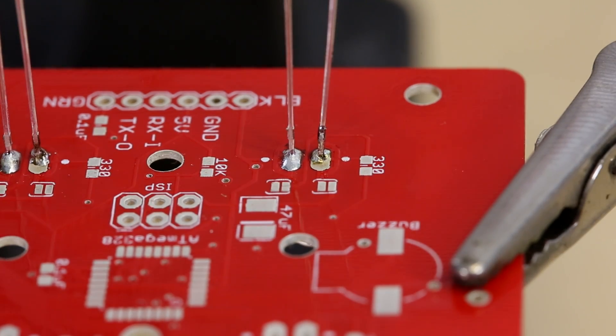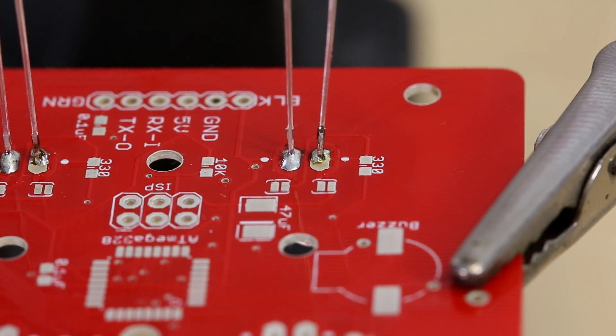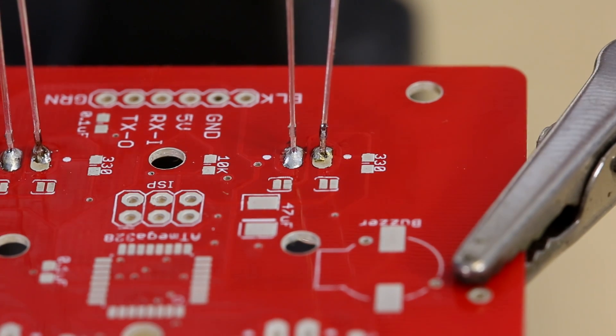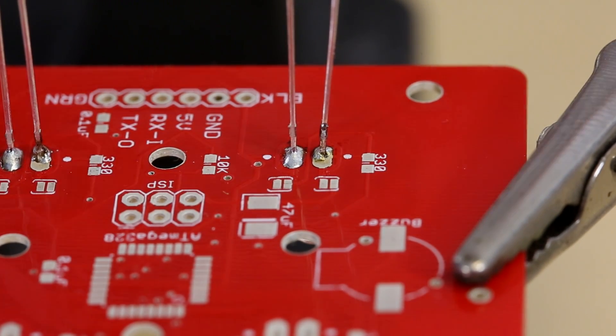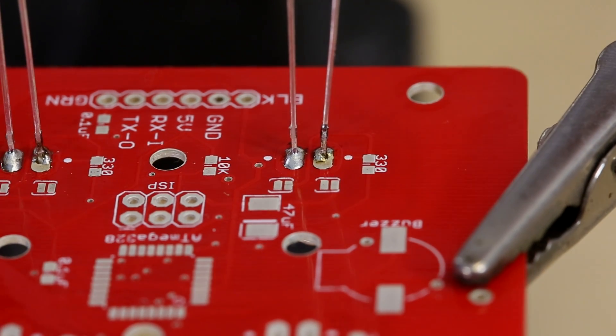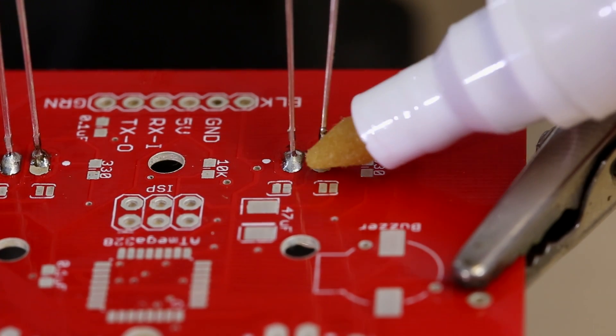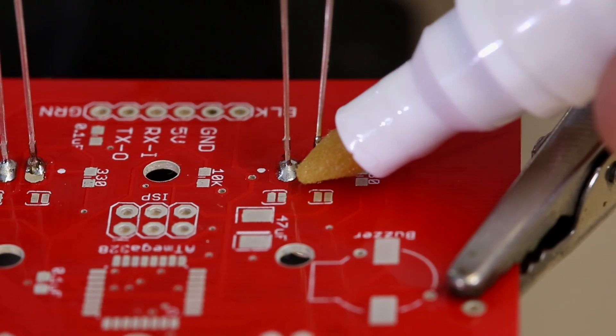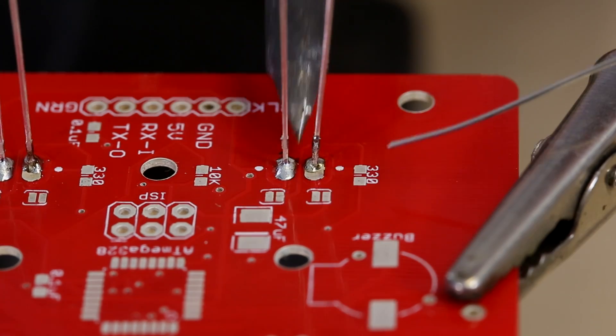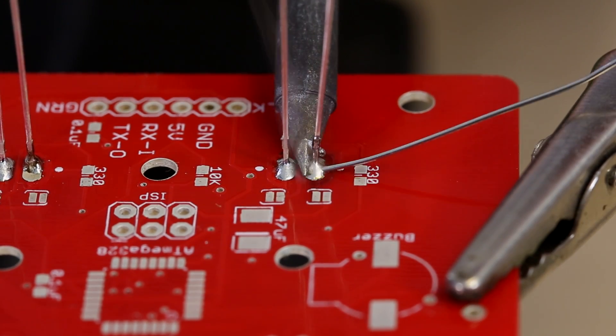Cold solder joints happen when heat is not displaced correctly and is either concentrated on the leg of the component or the through hole thus leading to an uneven solder joint. Some cold solder joints miss the connection entirely whereas some merely fill in half of the hole. Both of these can be remedied by using the flux technique we showed earlier. Simply dab the flux pin on the cold solder joint heat it with the tip and apply more solder if necessary.